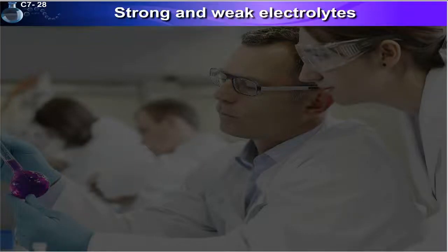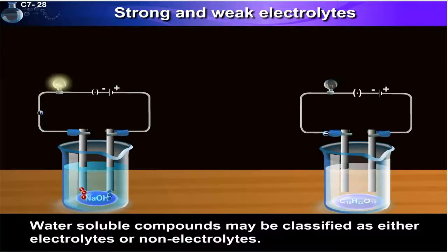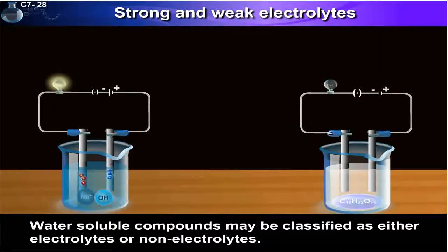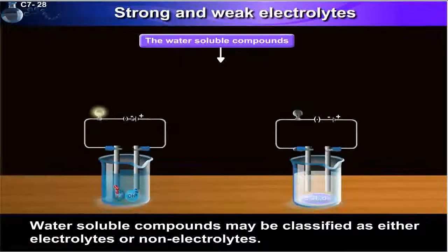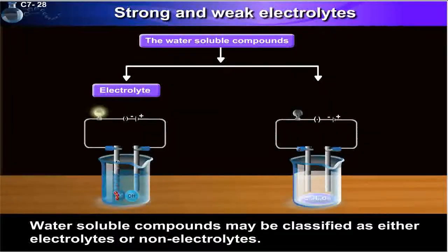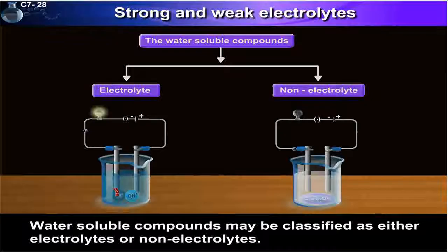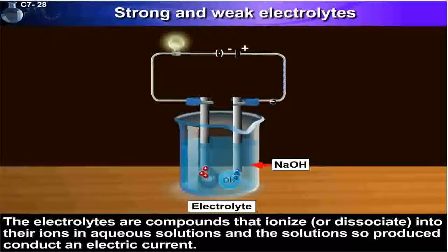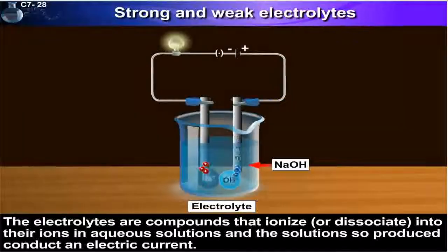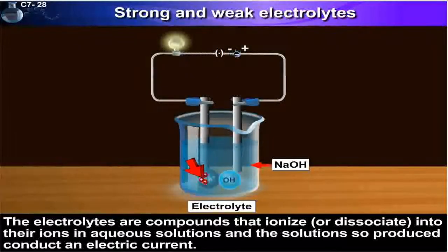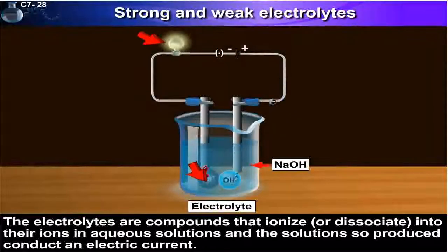Strong and weak electrolytes. Water-soluble compounds may be classified as either electrolytes or non-electrolytes. The electrolytes are compounds that ionize or dissociate into their ions in aqueous solutions, and the solutions so produced conduct an electric current.